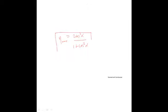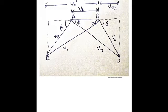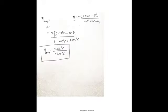This is the expression for maximum efficiency of a 50% Reaction Turbine: eta_max = 2·cos²α / (1 + cos²α). This concludes today's class; in the next class we will discuss another topic. Thank you.